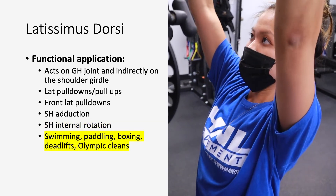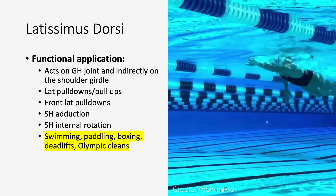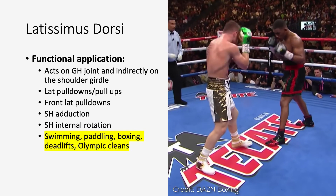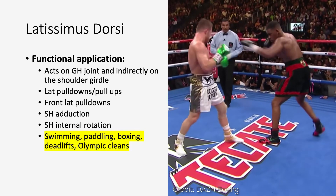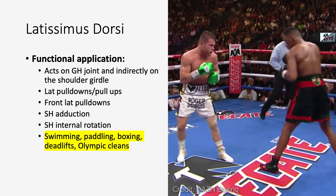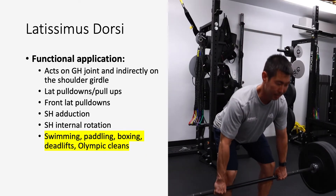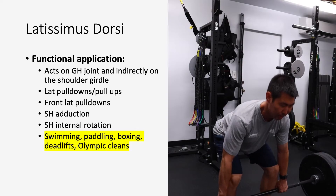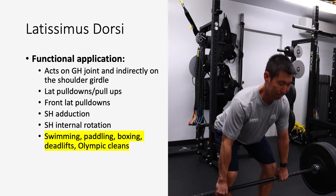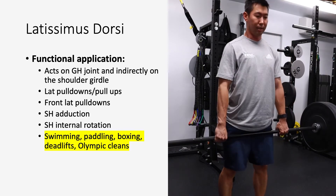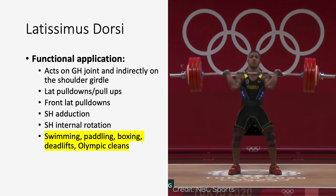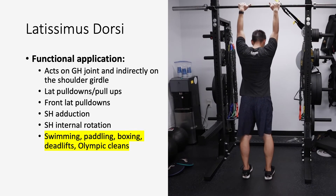Functionally, in sports — things like swimming, paddling, even boxing — there's a lot of lat activation when completing a punch to internally rotate and also pulling your arm back. And when doing any types of exercise that require activating your back to stabilize the shoulder joint, like deadlifting, powerlifting, or Olympic cleans, all of those require a lot of latissimus dorsi activation.